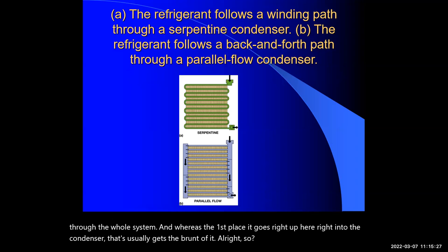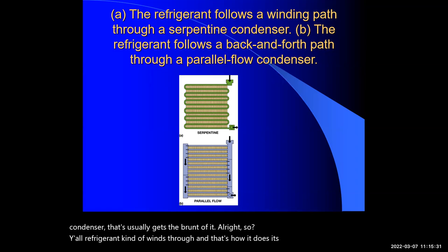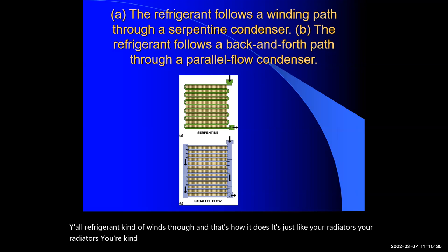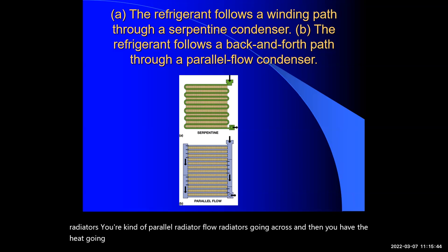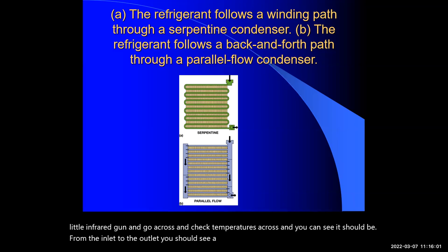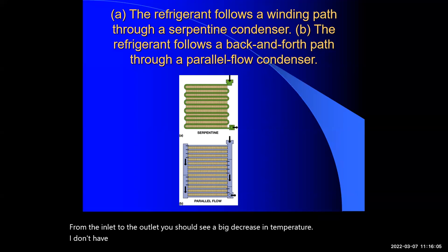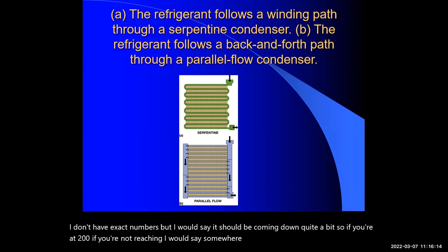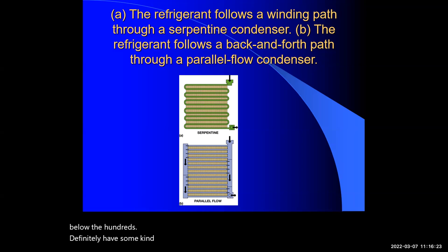Refrigerant kind of winds through the condenser — just like your radiators with parallel flow going across. You can actually take an infrared heat gun and go across and check temperatures from the inlet to the outlet. You should see a big decrease in temperature. I don't have exact numbers, but if you're at 200 degrees coming in and not reaching somewhere around 150 or lower, you definitely have some kind of problem there. I'll show you different ways of checking when we get to the diagnostic part.